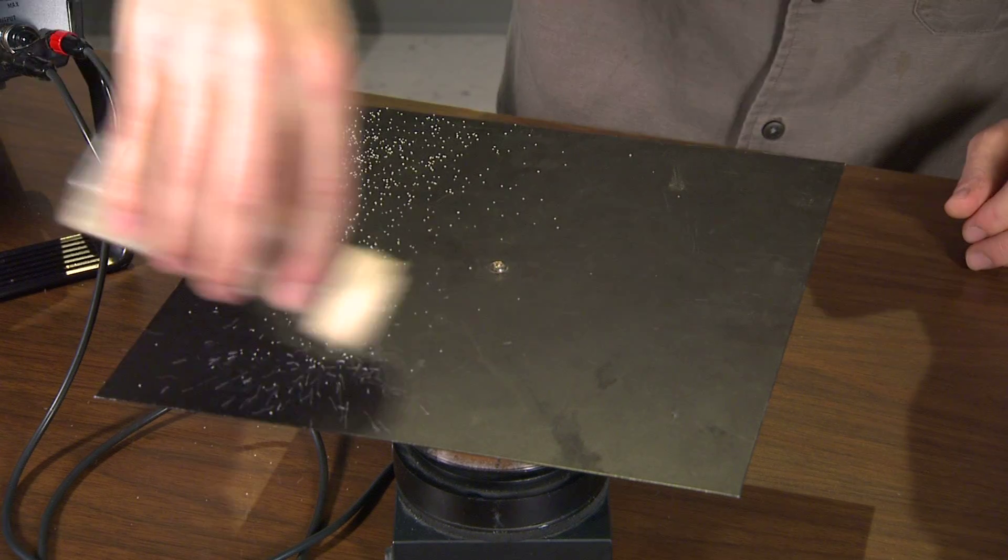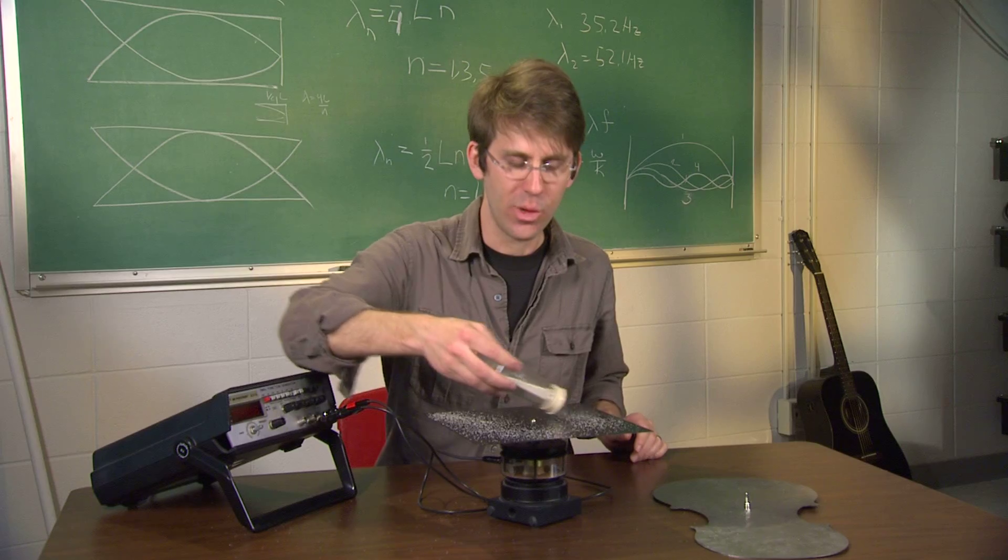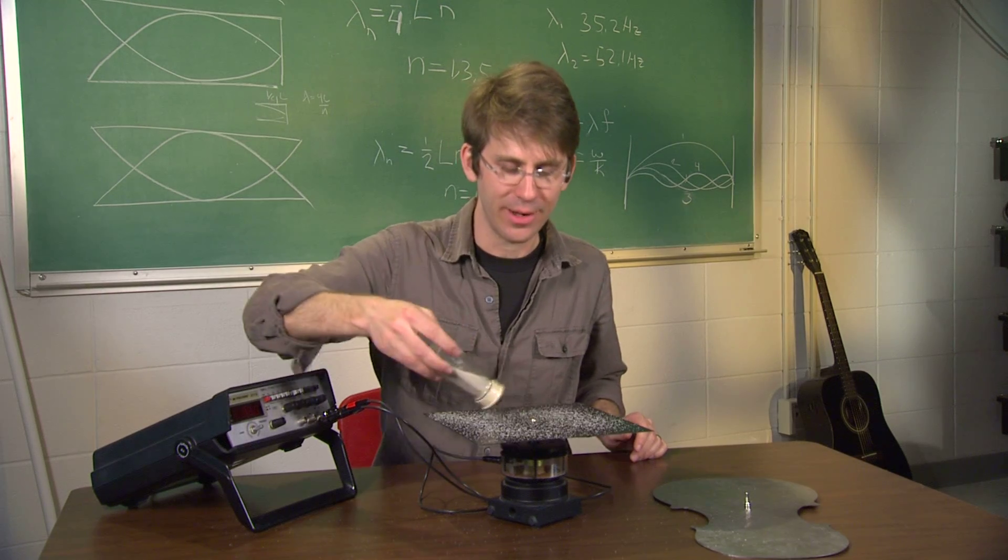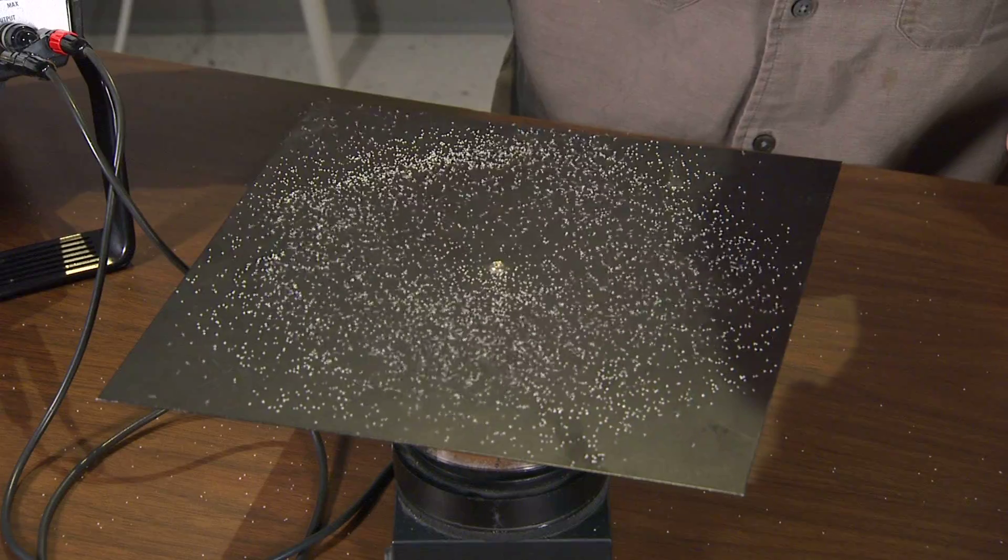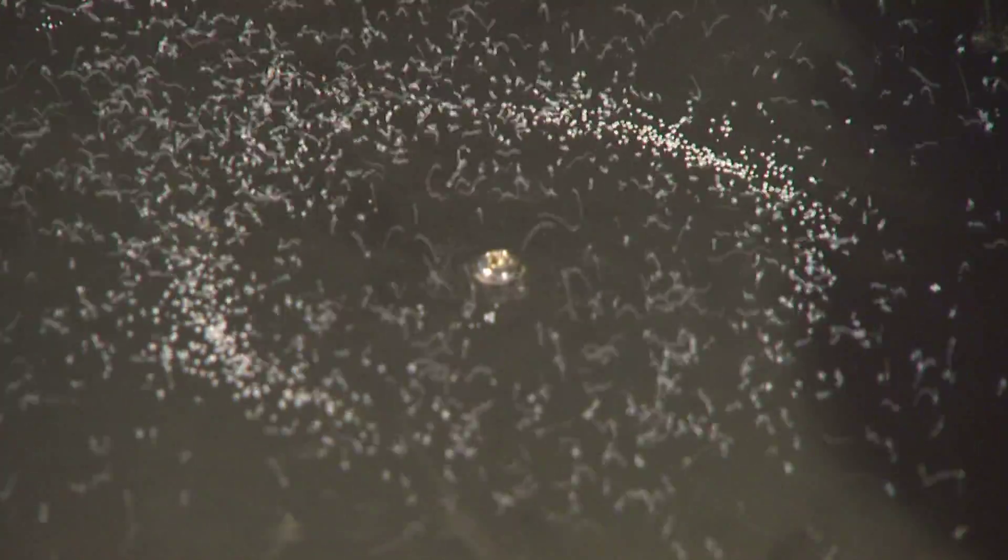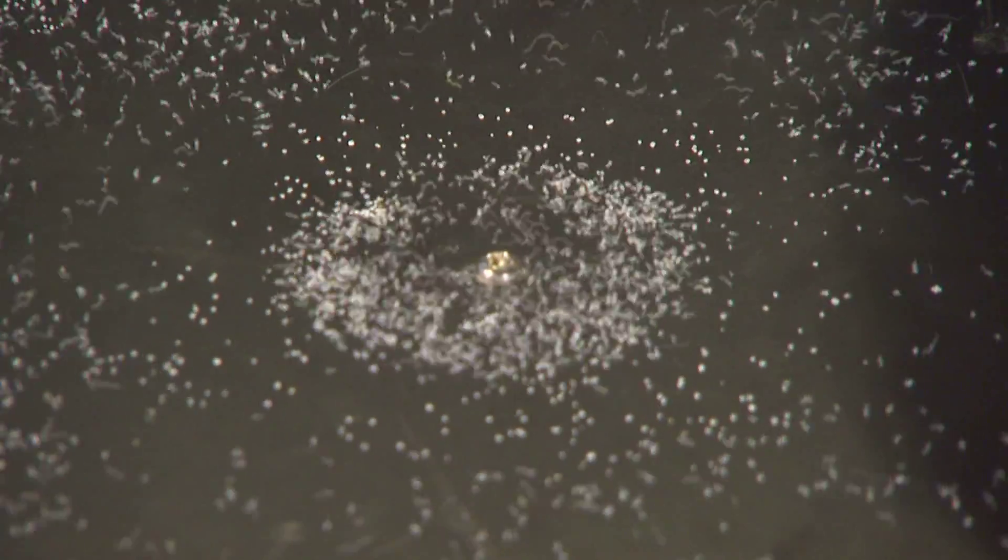If I put some sand on top of this, we can see how that's really an object that's moving around. We can see that the plate's moving because the sand is moving. We can also see that the plate's moving in a certain pattern because I have a pattern with the sand.